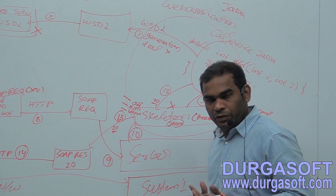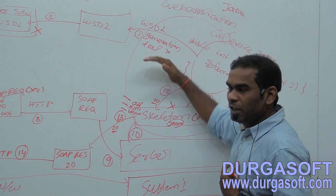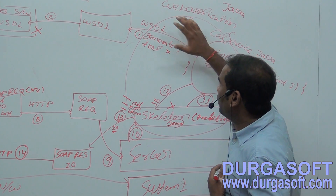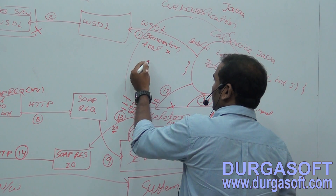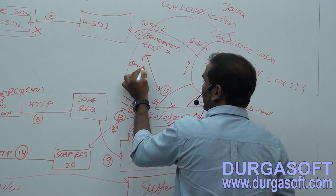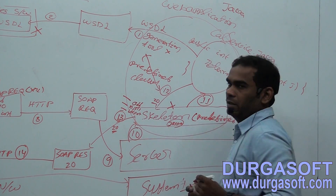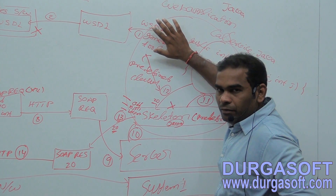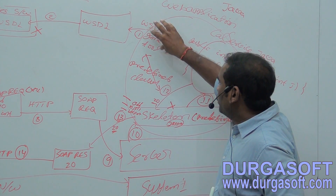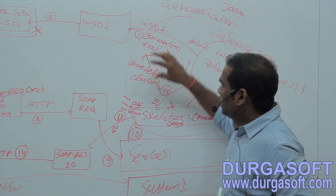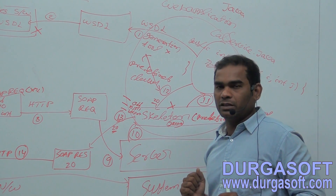Since we are Java developers, Sun Microsystem should provide the WSDL generation tool and the skeleton. These are predefined classes provided by Sun Microsystem, so they are Java classes. If they were from Microsoft, they would be Microsoft classes. If from PHP, they would be PHP classes.